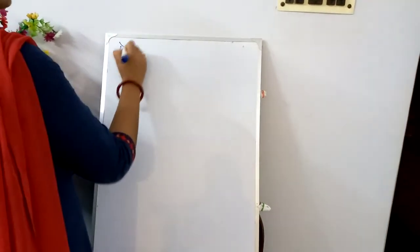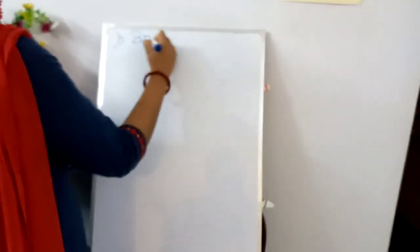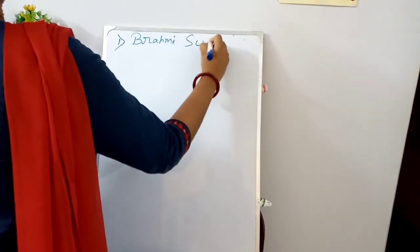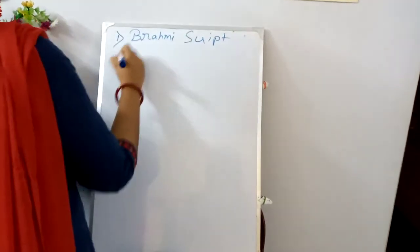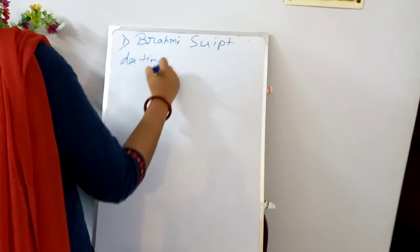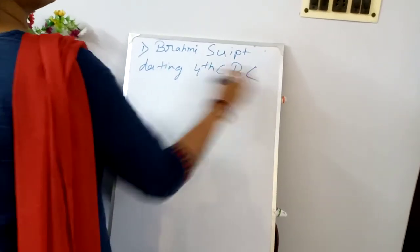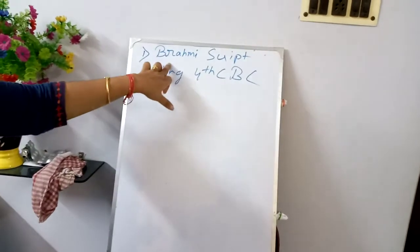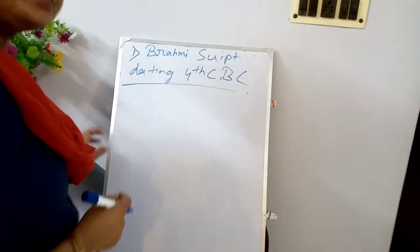The first script that was deciphered in India was the Brahmi script, dating back to the 4th century BC. This was the first script that was deciphered in India.